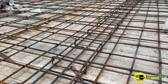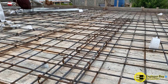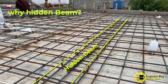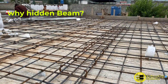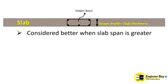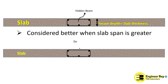Now, why is the hidden beam trending in the construction of buildings? That is because of it, we can construct slabs with greater span, which provides architectural beauty in the building's interior, because the hidden beam does not appear inside.